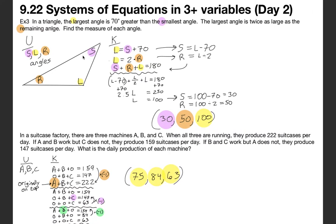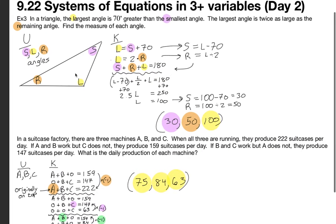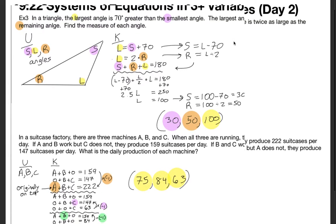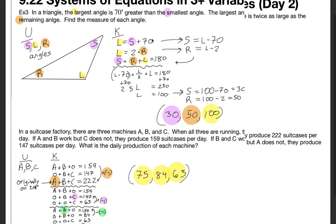For example, in a triangle, triangles are really great for systems of three variables because you've got three angles and three unknowns and then three equations. In a triangle the largest angle is 70 degrees greater than the smallest angle. The largest angle is twice as large as the remaining angle. Find the measure of each angle. I sketched out a little picture here and my unknowns are going to be the smallest, the remaining, and the largest angles. Largest, smallest, remaining.